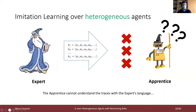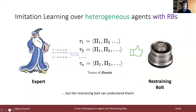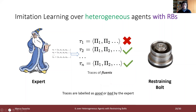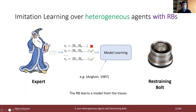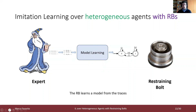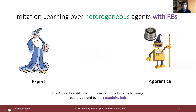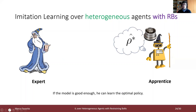Going back to our example, we can address the problem of heterogeneity in the following way. We transform the traces into a higher-level language such that the restraining bolts can understand them. Each trace is labeled by the expert as a positive or negative trace. Then, we give these labeled traces as inputs to a model learning algorithm — for instance, the Angluin L* algorithm. Notice that any model learning algorithm usable as a passive learning algorithm is good as well. The model learning algorithm gives an approximation of an automaton that models the traces. Finally, the restraining bolt guides the apprentice with the learned model. Notice that the apprentice doesn't need to understand the expert's language. If the model is good enough, the apprentice agent can learn the goal specified by the restraining bolt.